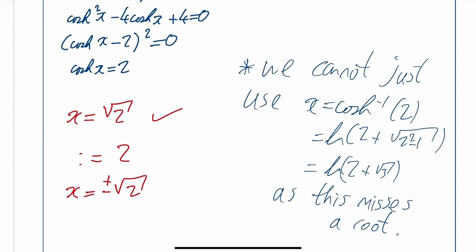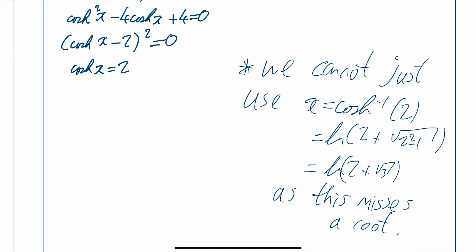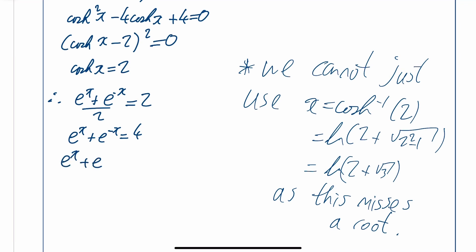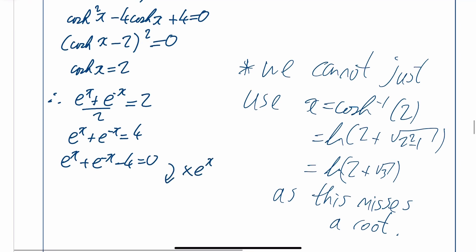So we write: (e to the x plus e to the minus x) over 2 equals 2, so e to the x plus e to the minus x equals 4. Bringing everything to one side and multiplying through by e to the x gives e to the 2x minus 4·e to the x plus 1 equals 0.